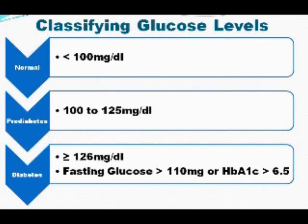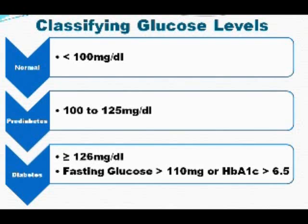According to the American Diabetes Association, a normal level of glucose is less than 100. If you have a level of 100 to 125, you are creeping into a dangerous area called prediabetes. If you have a level of 126 or greater, or if your hemoglobin A1c comes out greater than 6.5, that is criteria to be diagnosed with diabetes. Prediabetes, insulin resistance, and diabetes are all major components of metabolic syndrome.